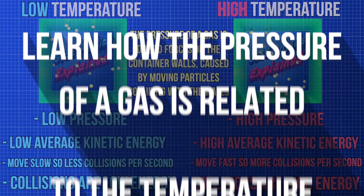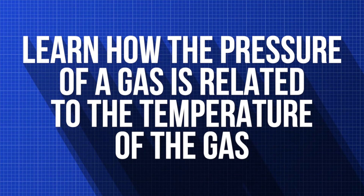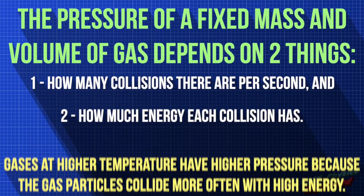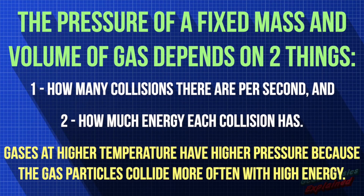So we've discovered how the pressure of a gas is related to the temperature of the gas. You can now explain that the pressure of a fixed mass and volume of gas depends on two things: how many collisions there are per second, and how much energy each collision has — and they both increase when the temperature increases.